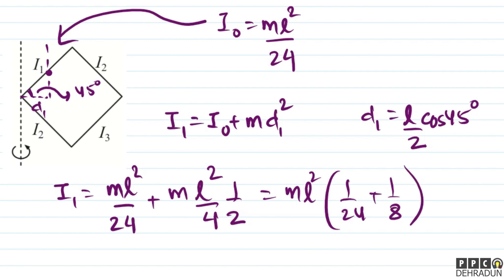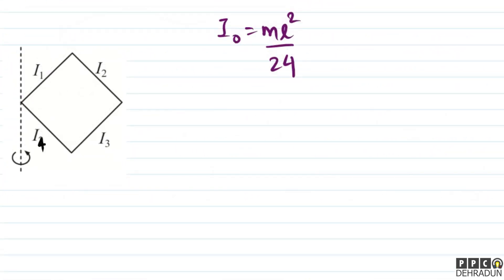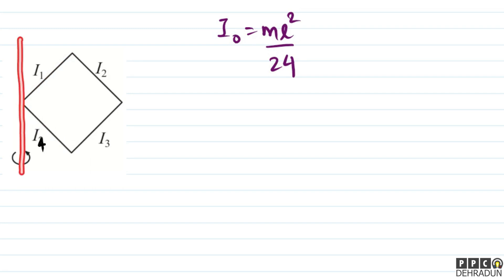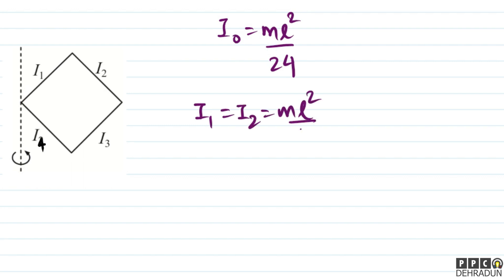Calculate करके I₁ = ML²/6 आता है। और clearly हम कह सकते हैं कि जो moment of inertia rod 1 का आया, वही rod 4 का भी आएगा about the given axis। तो I₁ = I₄ = ML²/6।